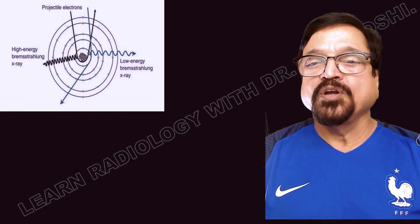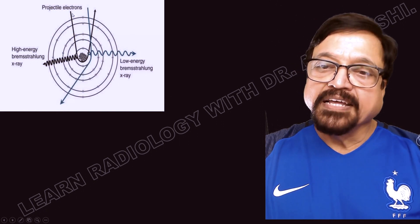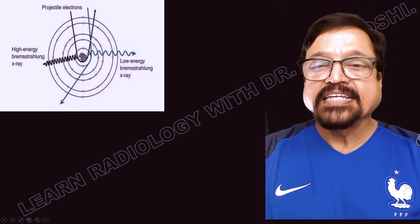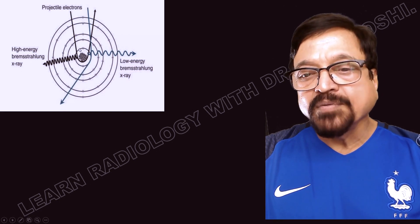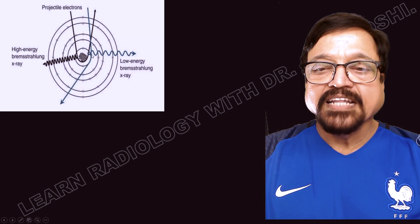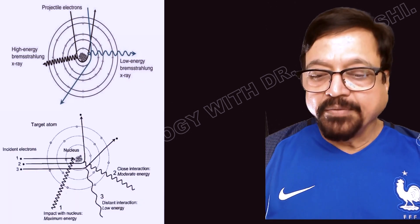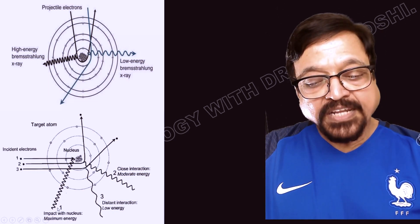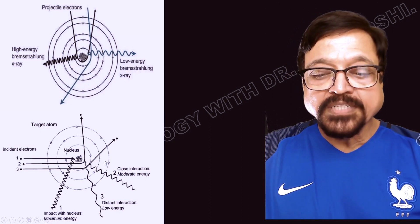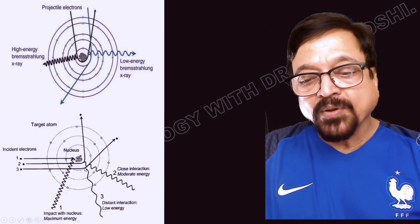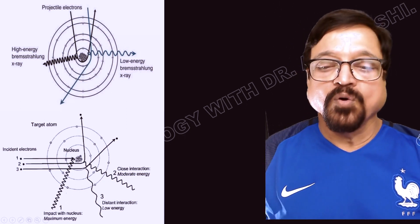To understand the Bremsstrahlung effect visually: the incoming electron approaches the nucleus. If it hits near the nucleus — where electrons have higher energy — the resulting photons will be of higher energy. If it hits the outer shell, the photons are of lower energy, producing low-energy Bremsstrahlung X-rays. Looking at multiple interactions: electron one hits the nucleus directly and gives all its energy — the resulting X-ray is of highest energy. Electron two hits the outer shell and produces less energy. Electron three passes further away, losing even less energy, producing the weakest X-rays.